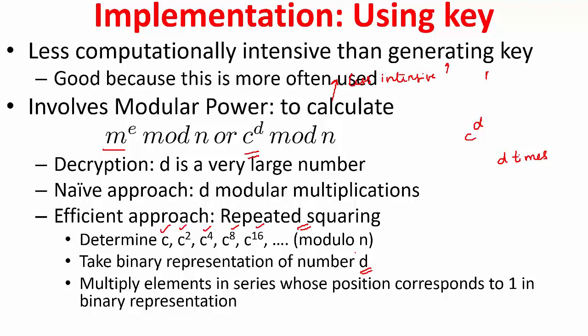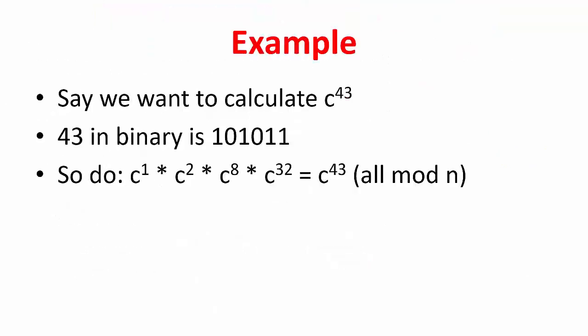I think an example will make this clear. Suppose we want to calculate c raised to power of 43. 43 is a small number here; this is just because this is an example, but this can be a very large number. This d can be a very large number. Now if you represent 43 in binary, this is what it is.